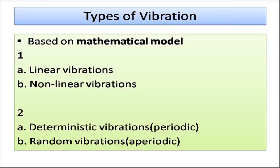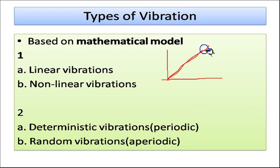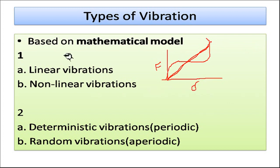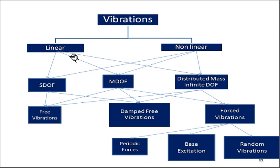Vibrations can also be classified based on mathematical model. In a linear spring the force-deflection variation is a straight line, while in a nonlinear spring the stiffness variation is nonlinear. Deterministic vibrations are periodic — they repeat themselves and can be predicted. Random vibrations are aperiodic, occurring very randomly with impacts and transients in between.